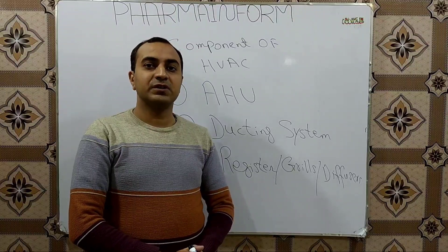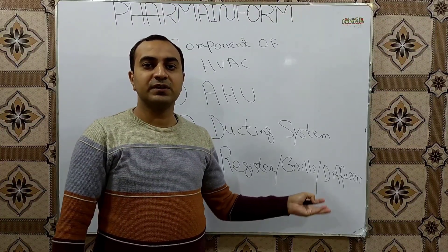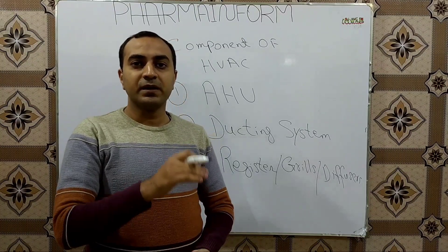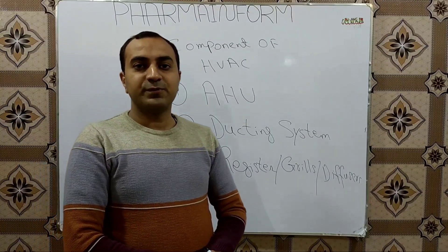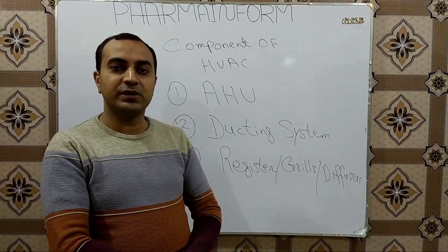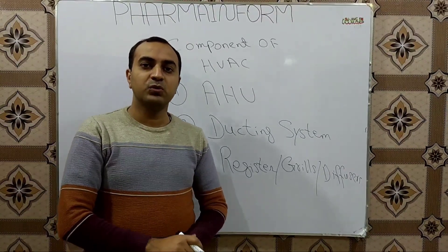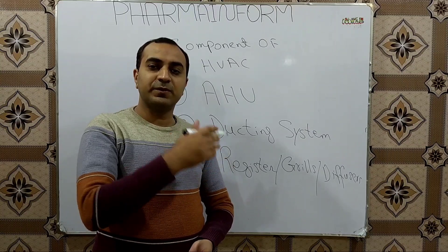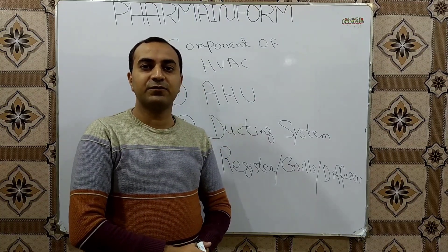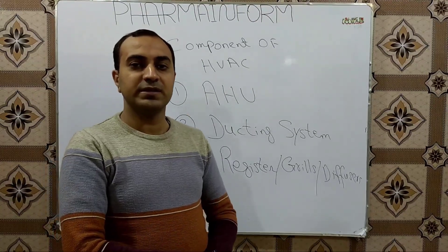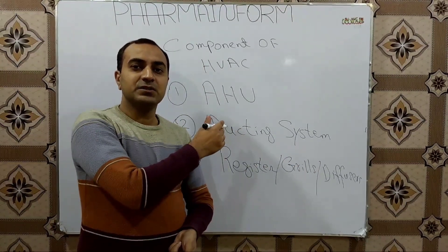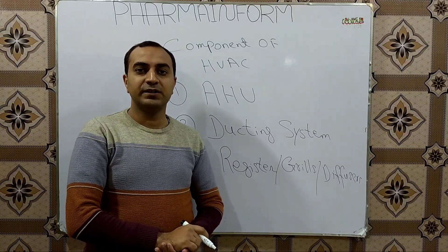Then we will discuss what registers, grills, and diffusers are, and the types of each. These are structures installed inside the room to supply air in a specific pattern, and they also help return air to pass through back to the return ducts and from the return ducts back to the AHU. In the next video we will start covering each component in detail.